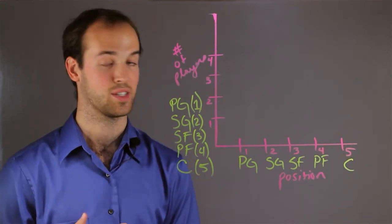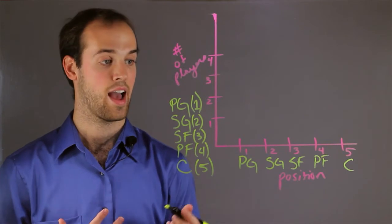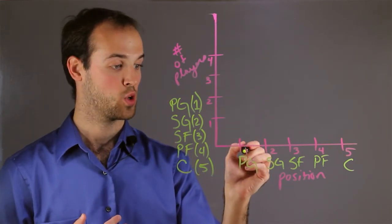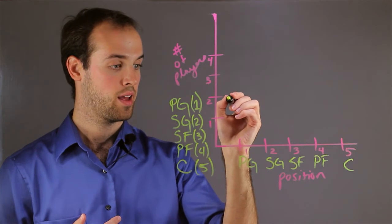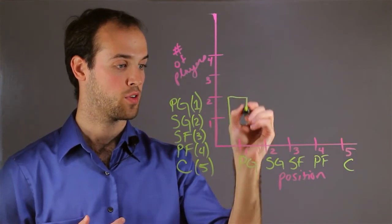So now all that's left to do is to graph the data. Let's say I have 2 point guards. All I would do is go over here to 1, or point guard, and take my bar up to 2 for the number of players.